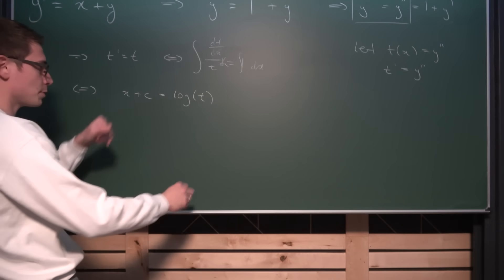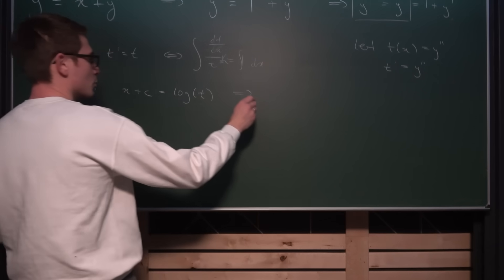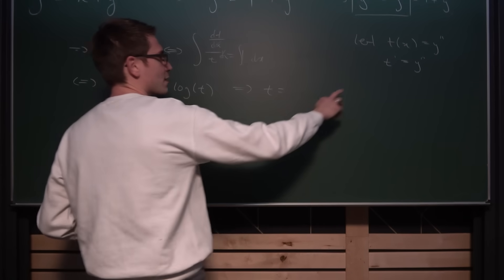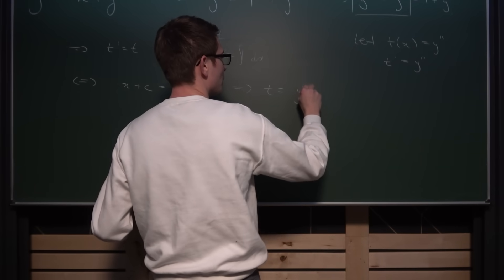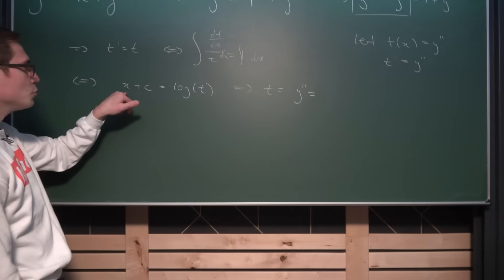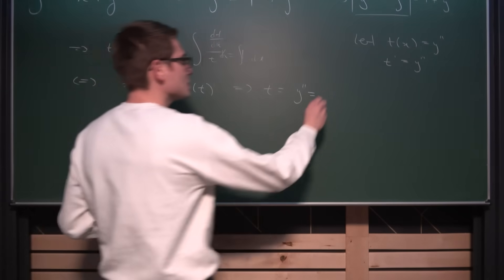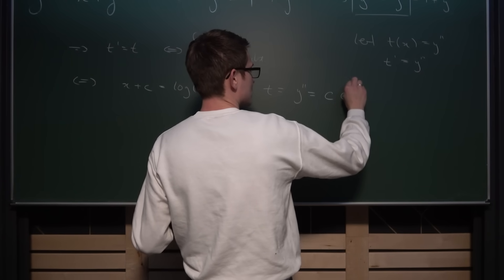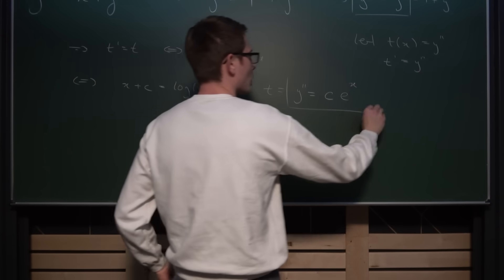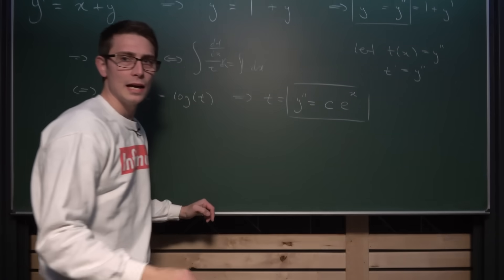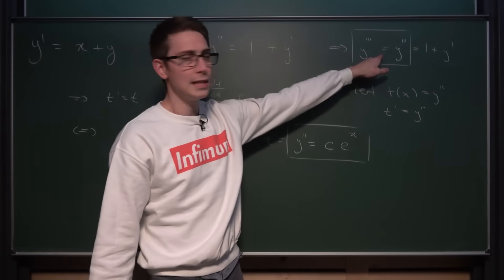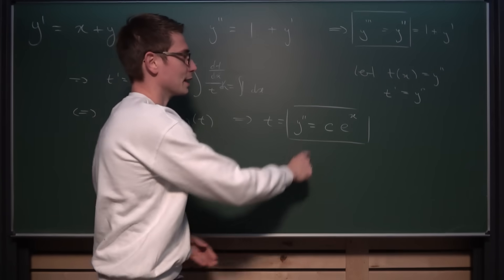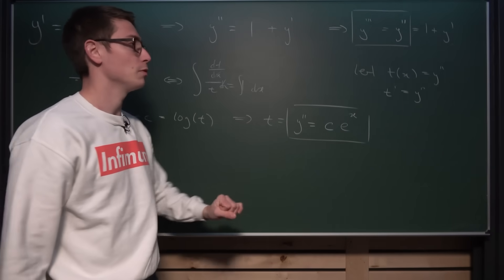And if we now take the exponential function on both sides, what we are going to get is that T, which is nothing other than Y'', is going to be equal to e to the X plus C, or in other words, some constant C times e to the X. This is what Y'' looks like. And by this relationship here, we can immediately see that it needs to be like this if it's not a trivial solution.